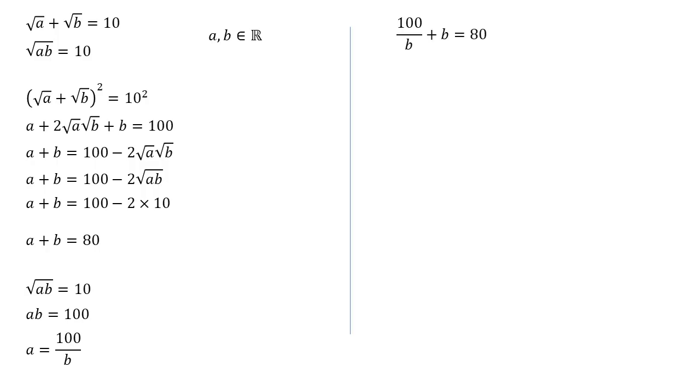So we've substituted this into our a plus b equation. We've now got 100 over b plus b equals 80. I'm going to multiply through by b to get rid of that fraction. So we have 100 plus b squared equals 80b. Moving everything to one side to get a quadratic, b squared minus 80b plus 100 equals zero.